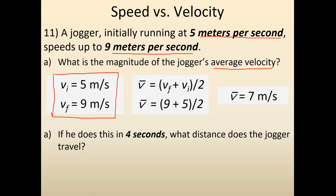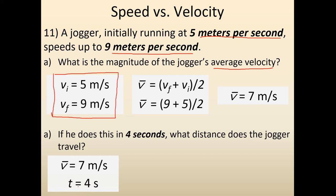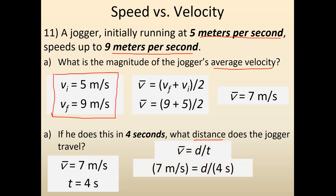For part B, they want to know the distance traveled. Using the average velocity found previously and the time of 4 seconds, apply V-bar = d/t, this time solving for distance. The distance comes out to 28 meters.